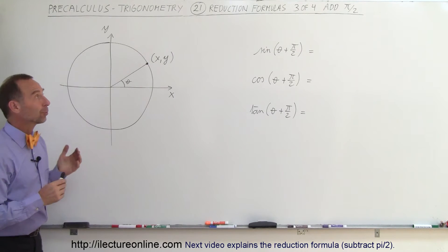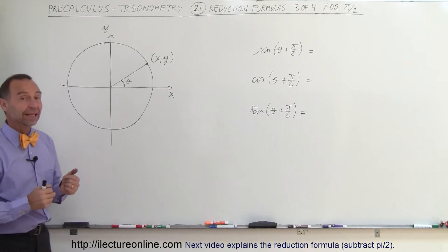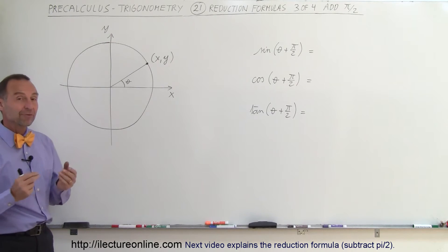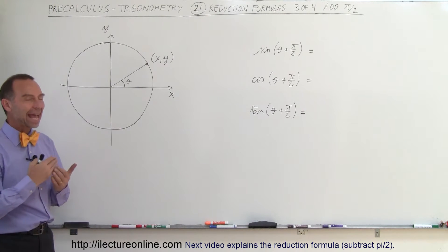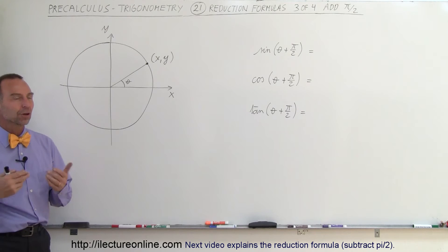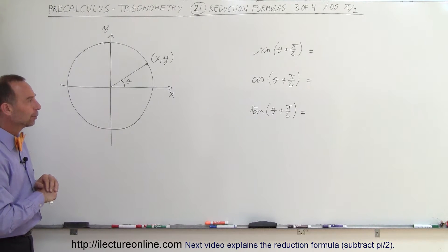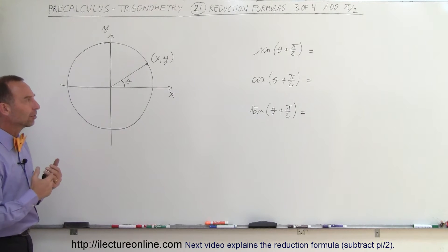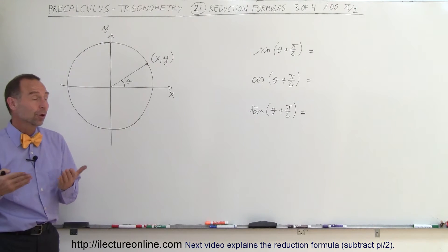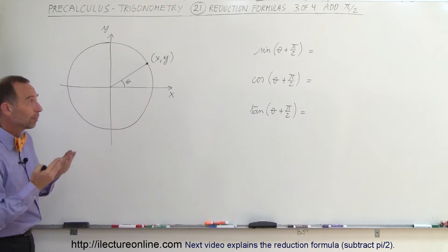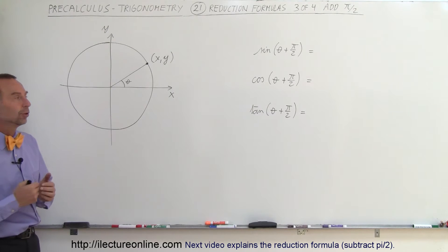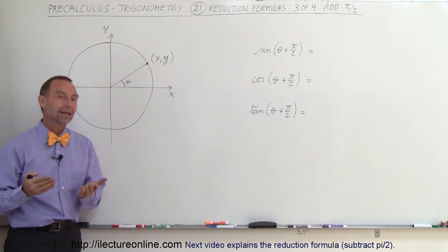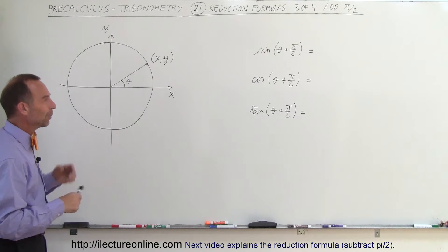Welcome to ElectronLine. Our next reduction formula is the one where we add pi over 2, or 90 degrees. This happens to be a very common and handy reduction formula that we'll use in many different ways. So how does the sine of theta plus pi over 2 transform? What does the cosine of theta plus pi over 2 become? And what does the tangent of theta plus pi over 2 become?